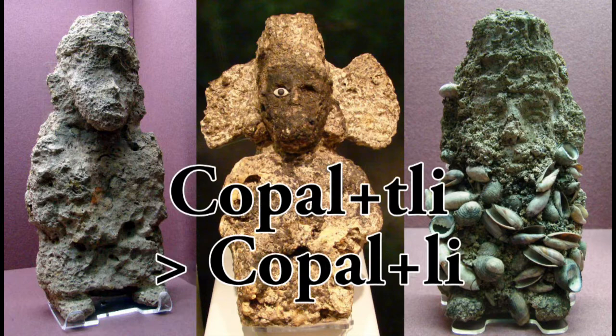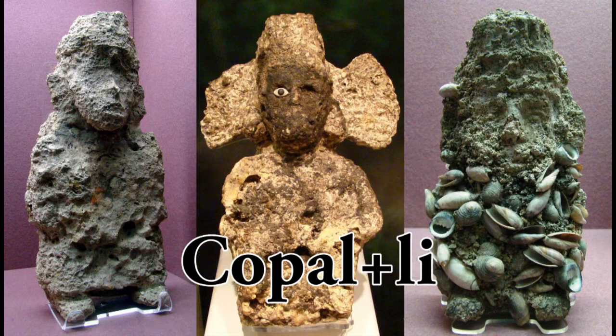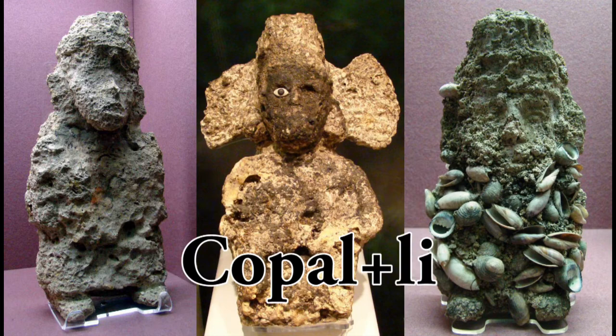Rule three: if the noun root ends in an L, the tli will assimilate to li, because kopalli is easier to say than kopaltli. Examples: kopalli (incense), tónali (calendar day sign).